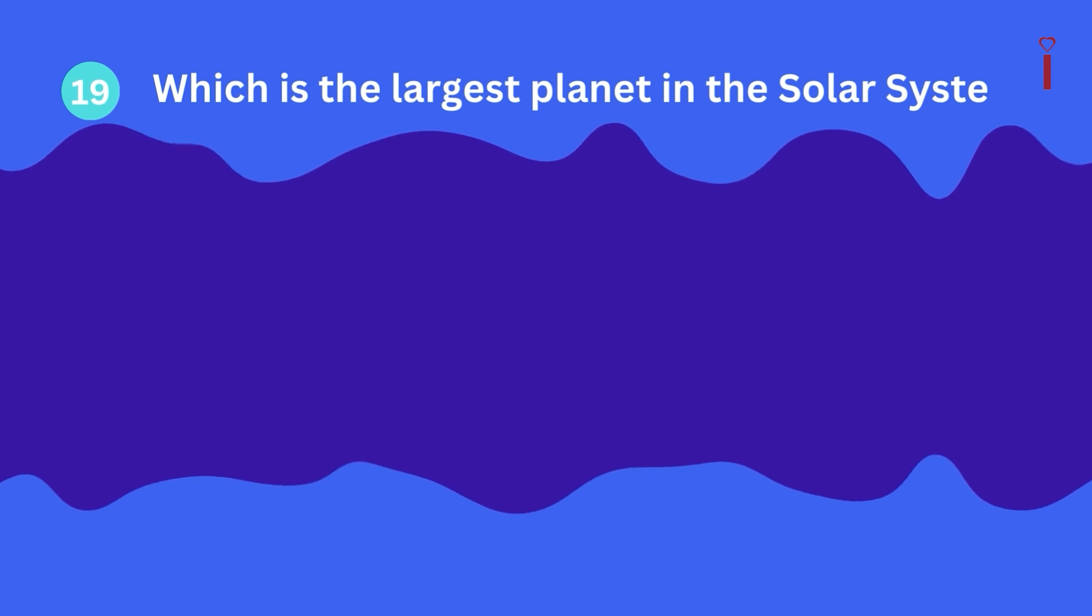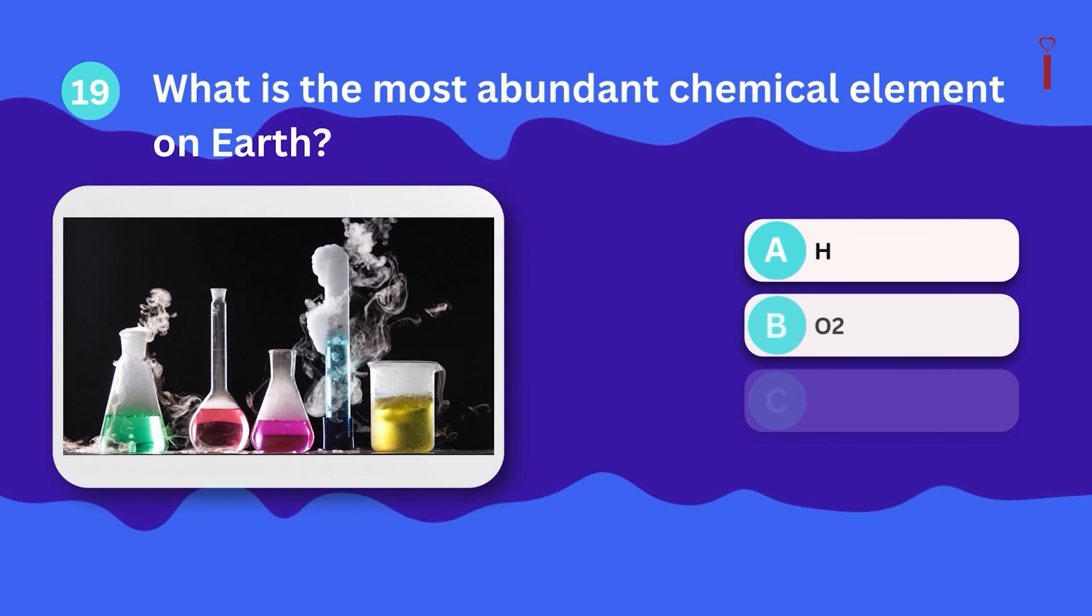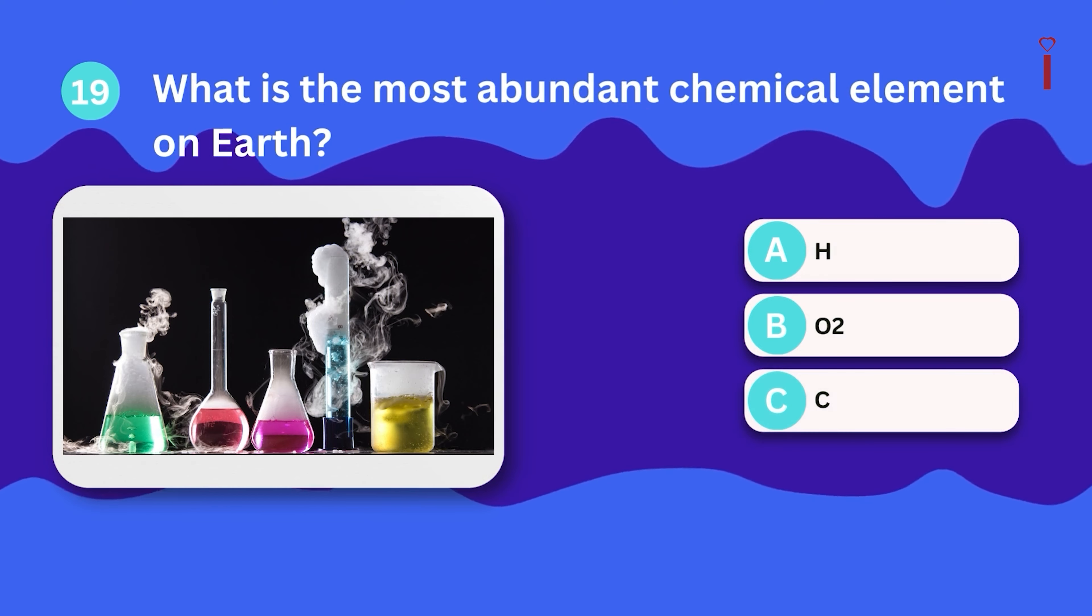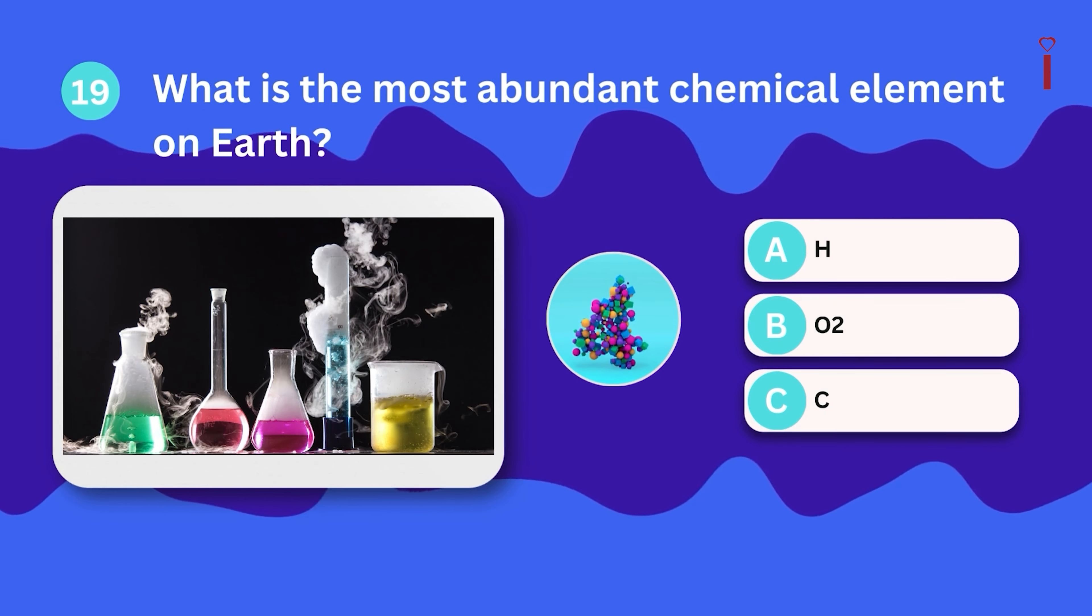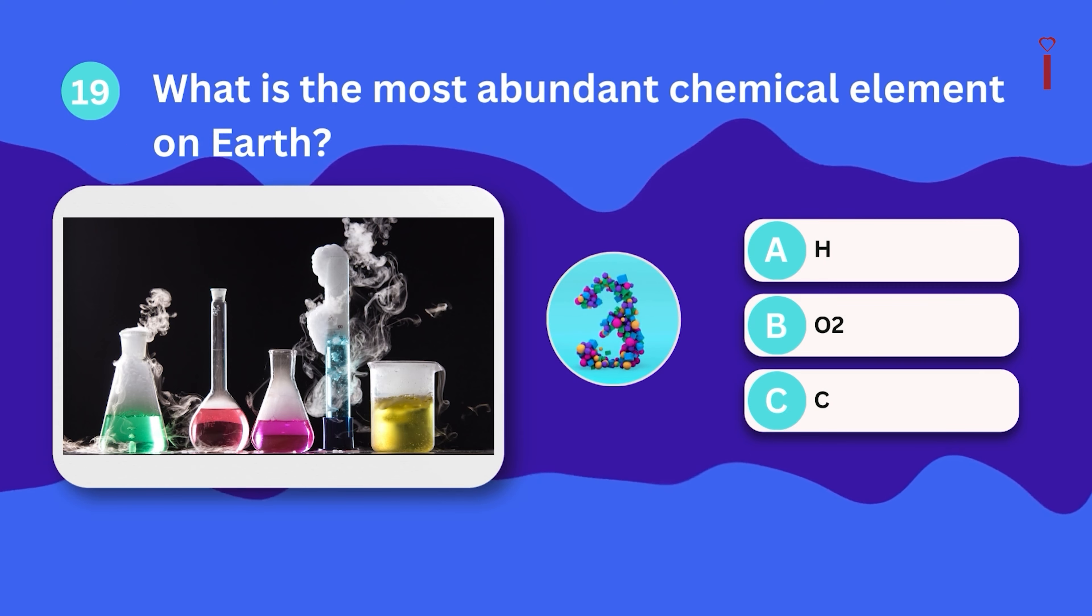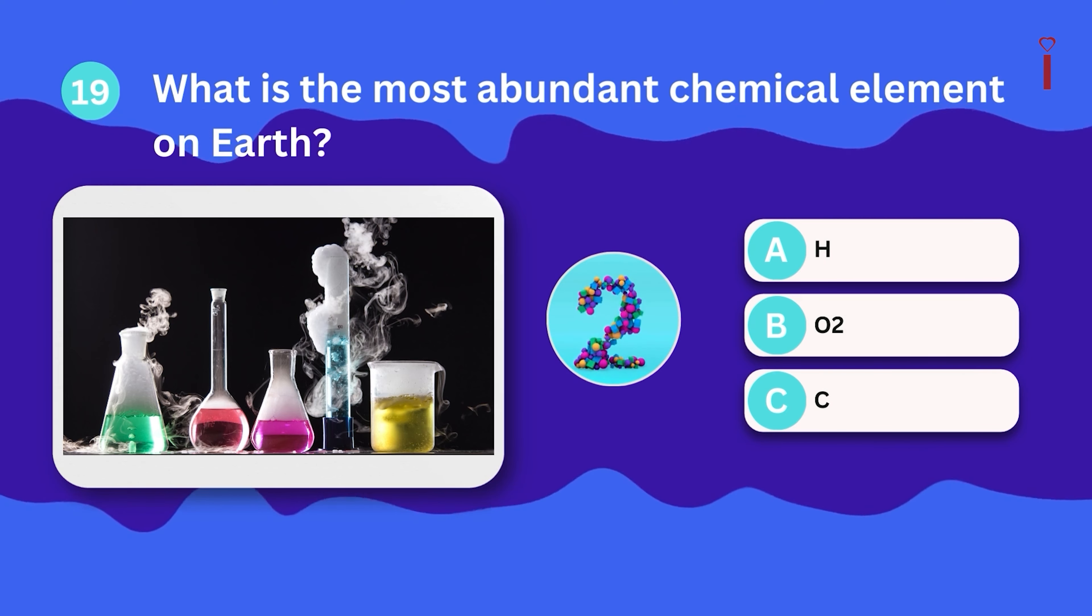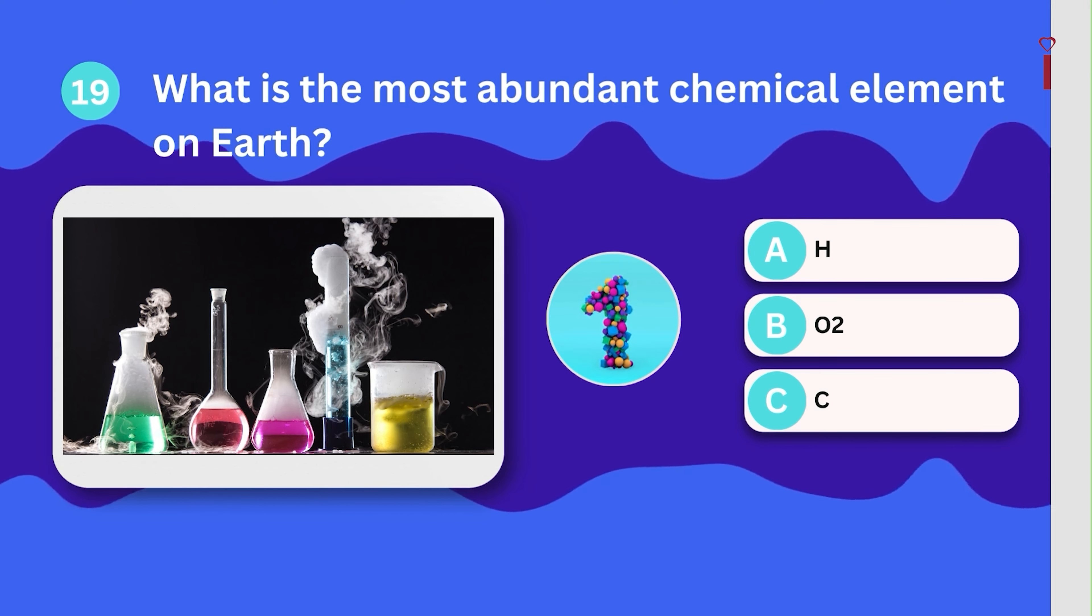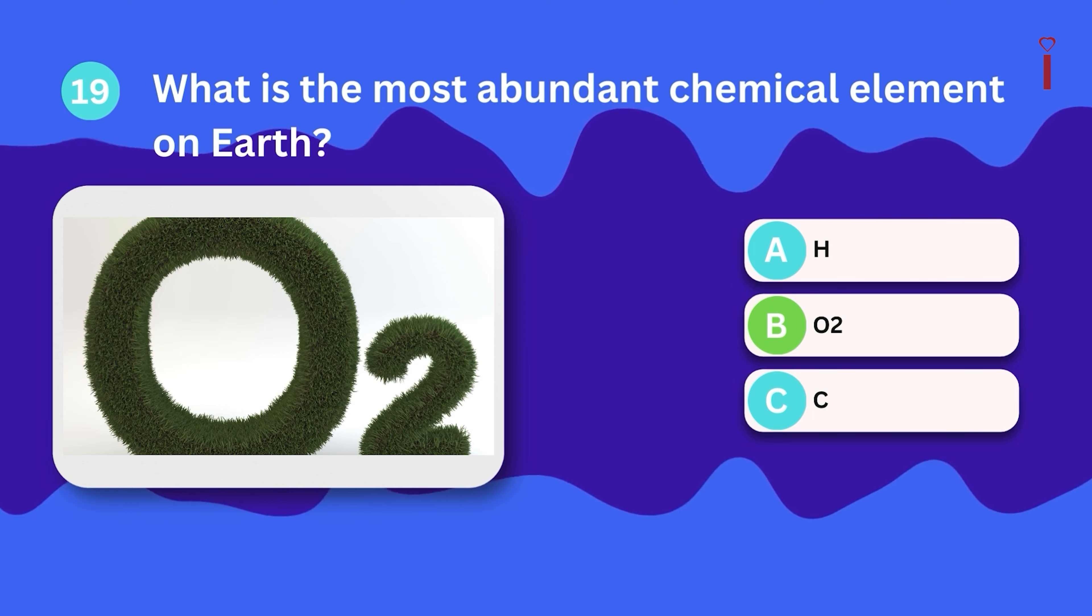Question number nineteen. What is the most abundant chemical element on Earth? Hydrogen, oxygen, or carbon? It's oxygen.